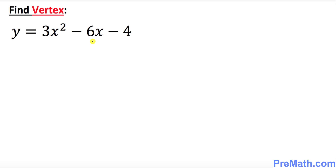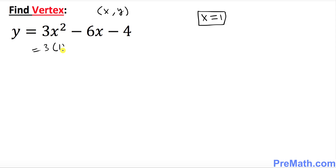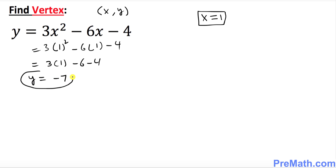In this step we are going to find the vertex. The vertex is simply an x and y value. As we found in the previous step, x equals 1. Now plug x equals 1 into the function: 3 times 1 squared minus 6 times 1 minus 4. That gives us 3 times 1, which is 3, minus 6 minus 4, which turns out to be negative 7. So y equals negative 7, meaning our vertex is the point 1 comma negative 7.